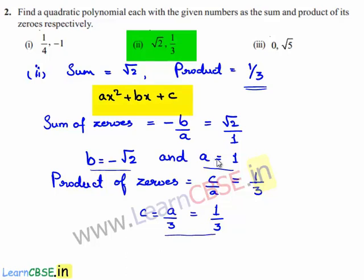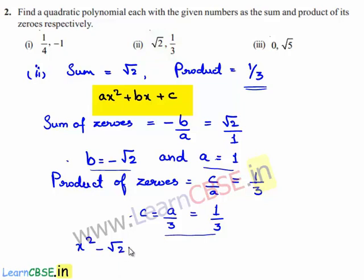Substituting the values of a, b, and c in the polynomial ax² + bx + c, we get x² - √2·x + 1/3. So the required polynomial is x² - √2x + 1/3.